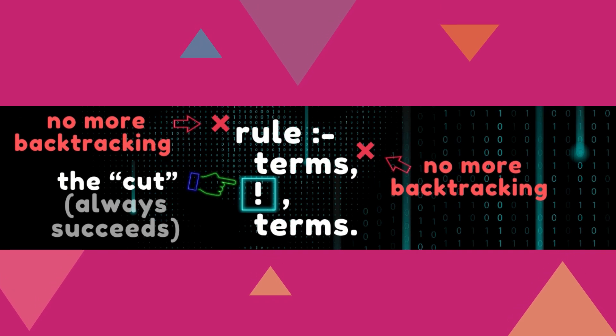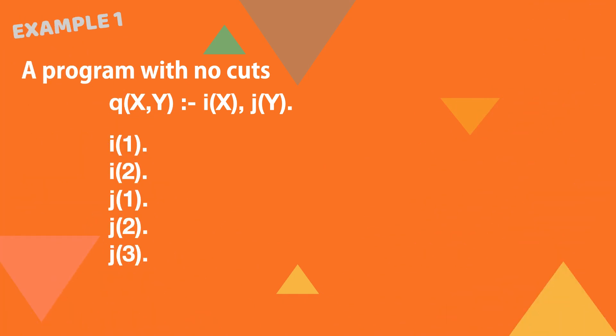Let's look at an example of the first of these side effects. This program has two possible values for i and three possible values for j. Combining these gives six possible ways to succeed.